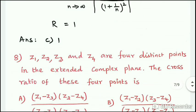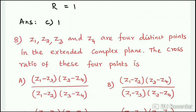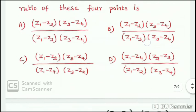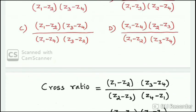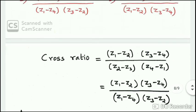Next question: Z1, Z2, Z3, and Z4 are four distinct points in the extended complex plane. The cross-ratio of these four points is given by the formula: cross-ratio = (Z1 - Z2)(Z3 - Z4) / (Z2 - Z3)(Z4 - Z1). The numerator has two terms and the denominator has two terms.